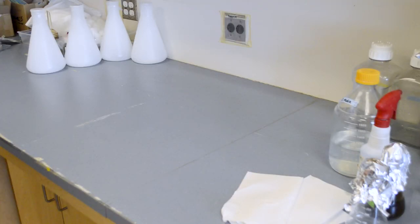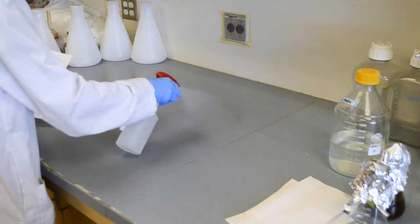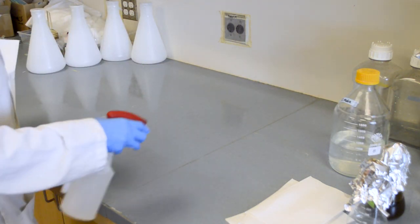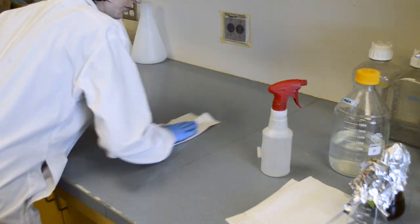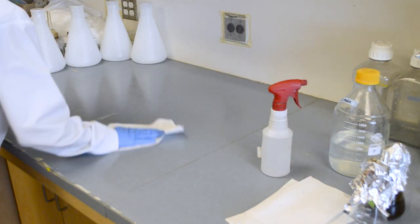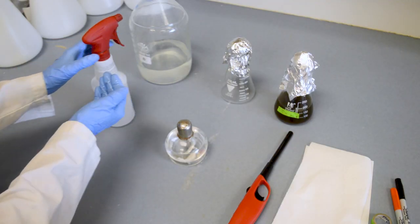First we use the paper towel and alcohol spray to clean our empty workbench and wipe it down. Wipe the bench from back to front so you can clean the areas you were leaning over. You aren't trying to dry the alcohol, but you want to spread it out so that the entire surface is cleaned.